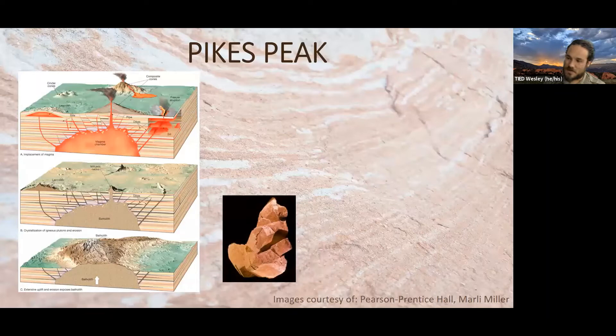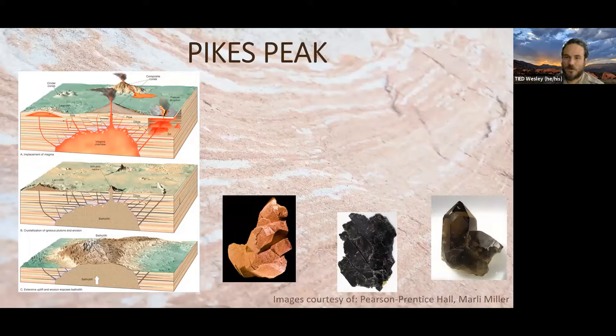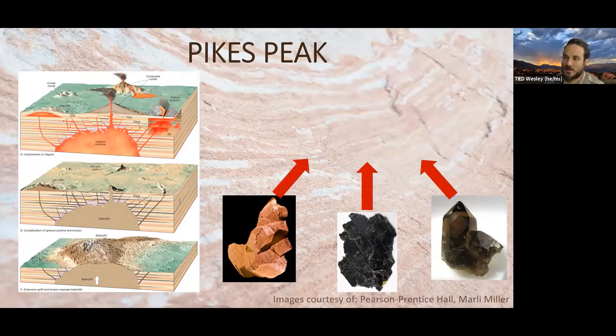Pikes Peak Granite is really cool stuff — it's made out of this beautiful pink material, which is potassium feldspar. We also have a black mica called biotite, and a grayish or white smoky quartz. There's also a variety of feldspar that's a beautiful blue-turquoise called amazonite, which is due to some impurities. Put those three minerals together and by their powers combined they're Pikes Peak Granite.